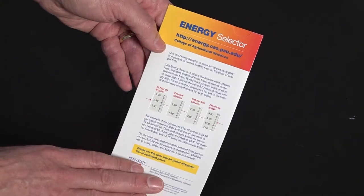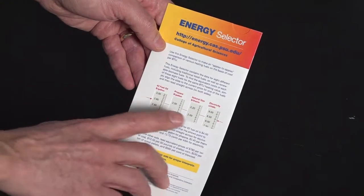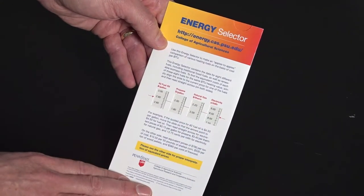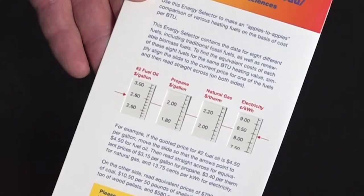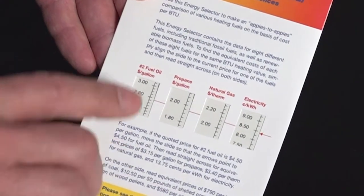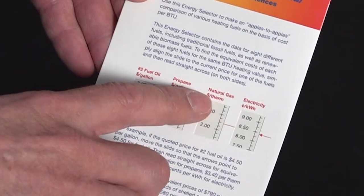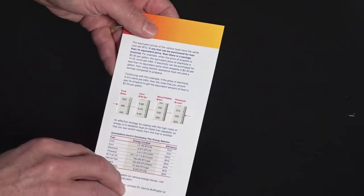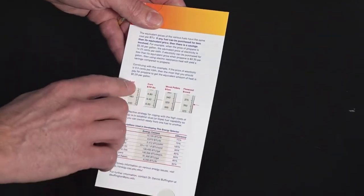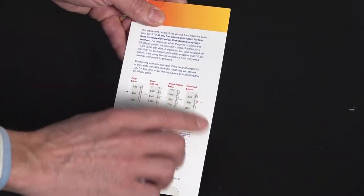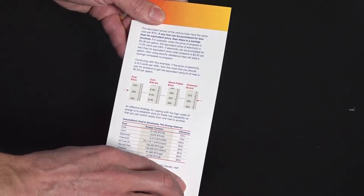The energy selector has four windows on each side of the card, and each window corresponds to a different heating fuel. On one side we have fuel oil, propane, natural gas, and electricity, and on the other side, coal, corn, wood pellets, and firewood.